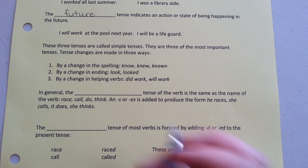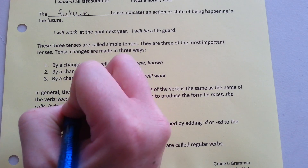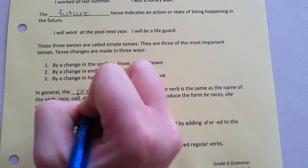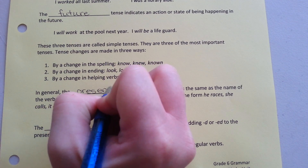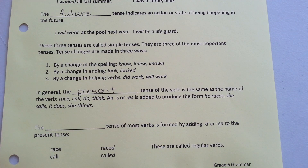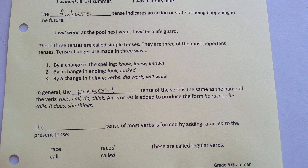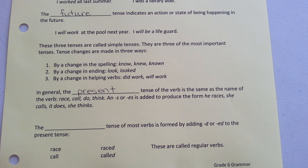In general, the present tense of the verb is the same as the name of the verb. For example: race, call, do, think. An S or ES is added to produce the forms: he raises, she calls, it does, she thinks.